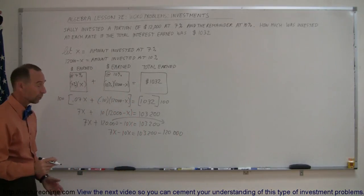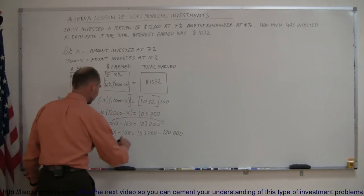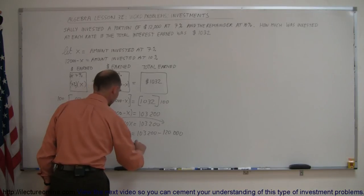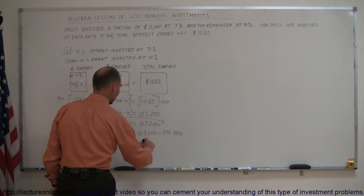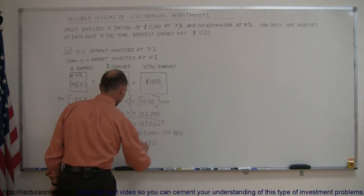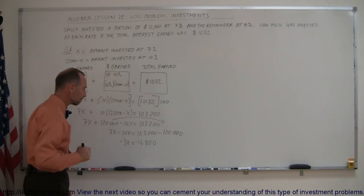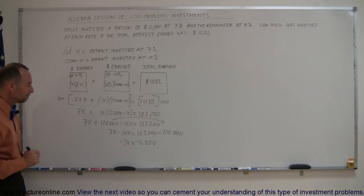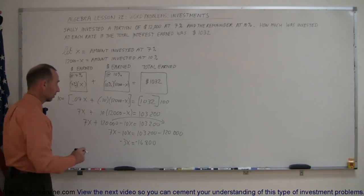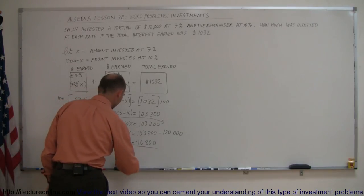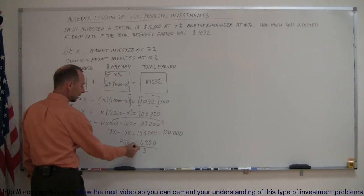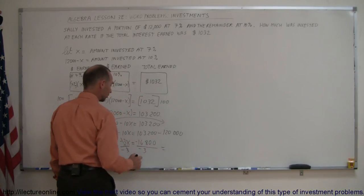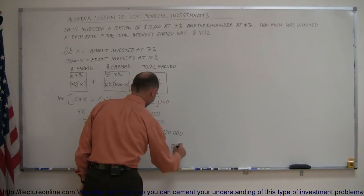Okay, next, we combine like terms. So, this is minus 3X on the left side equals this minus this. That would be 16,800 with a negative in front, because this is bigger than that. And now the last part, if we divide both sides by the numeric coefficient in front of the X, the negative 3s cancel out, the negatives here cancel out, and this gives me 5,600.